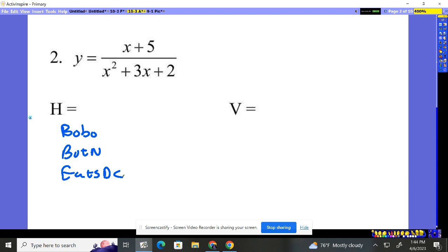Okay, so what does it mean? Bob, bigger on bottom, y is going to be zero. If it's bigger on top, you're going to have none. And if exponents are the same, we're going to divide the coefficients. Let's see what we have.